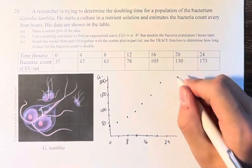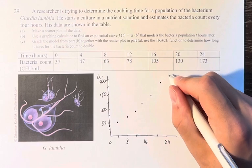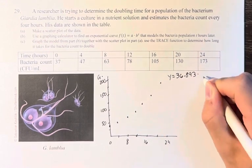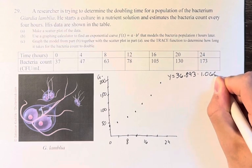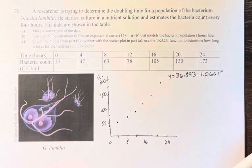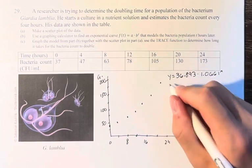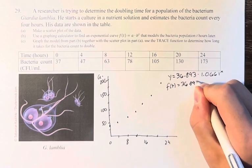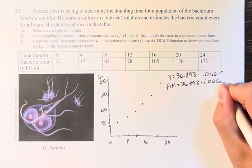And I'm about to pull that up, but for this we have the result: y = 36.893 * 1.0661^x. That is what your calculator spits out, and you have to turn that into f(t) = 36.893 * 1.0661^t.